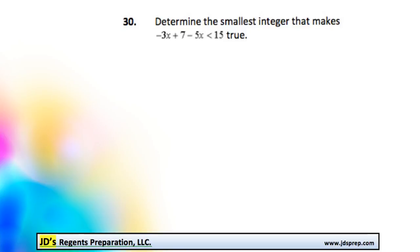This is problem number 30 from the June 2015 Algebra Regents exam. Determine the smallest integer that makes this inequality true. We have negative 3x plus 7 minus 5x is less than 15. The first thing we need to do is actually solve this inequality.